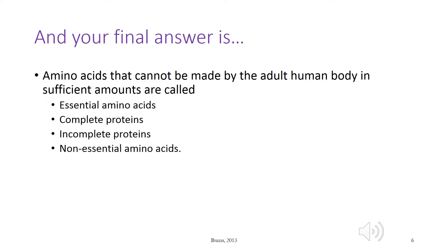Amino acids that cannot be made by the adult human body in sufficient amounts are called essential amino acids, complete proteins, incomplete proteins, or non-essential amino acids? The correct answer is essential amino acids.